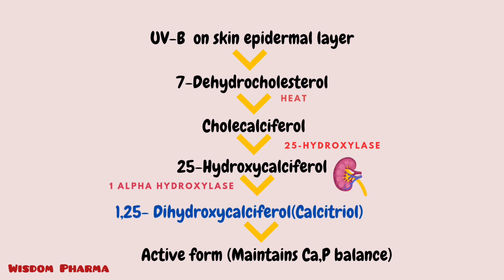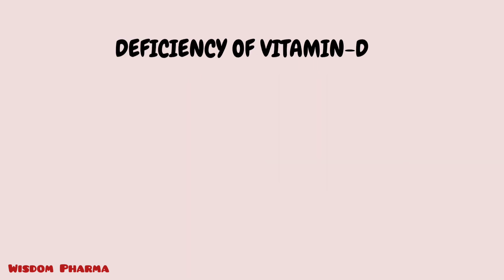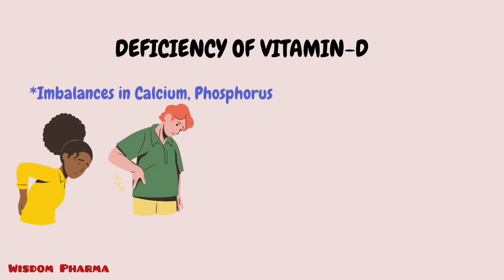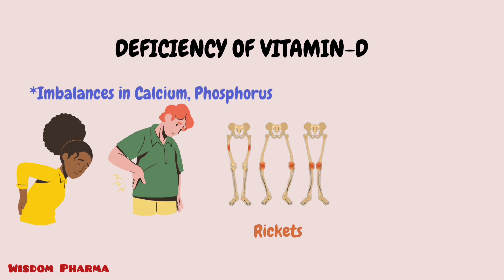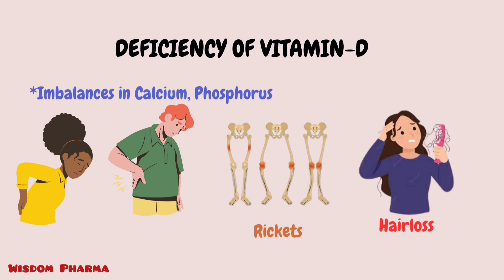Calcitriol plays a key role in maintaining calcium and phosphorus balance in the body. If we don't have sufficient vitamin D from food sources, we will have a deficiency. Vitamin D deficiency leads to conditions like rickets in children, as well as symptoms in adults such as hair loss and skin paleness.